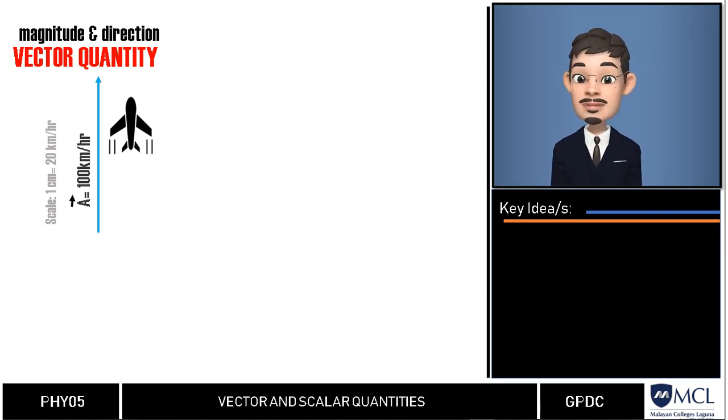Below this plane, there is a tailwind which blows north at a velocity of 20 km per hour. Here, I would represent it following our chosen scale, 1 centimeter is equal to 20 km per hour, and then an arrow going north, and then we will label it with vector B.